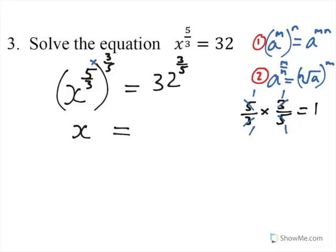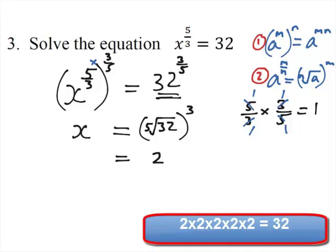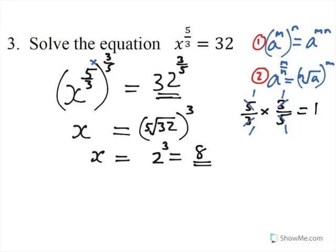Now, so x is equal to 32 to the power of 3 fifths. If we now go to rule number 2, we can see that n is 5. So it's the fifth root of 32 to the power of 3, where m is 3. So what number do I multiply by itself 5 times to give me 32? Well, the answer is 2. So I've got to cube the 2, and if I do that, I get 8. Be careful not to say it's 2 times 3, which is 6. Did you manage this one? I hope so.